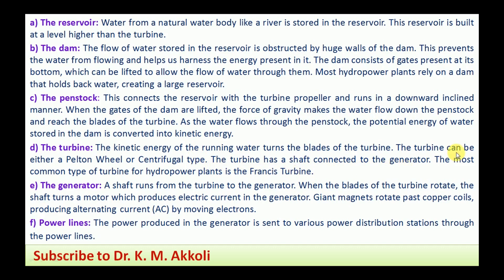The turbine shaft is connected to the generator. The most common type of turbine for hydropower plants is the Francis turbine. The Pelton turbine works at high head and low flow rate; the Francis turbine works at medium head and medium flow rate, which is why most power plants use the Francis turbine. The Kaplan turbine works at low head and higher discharge — around seven to eight meters of head.